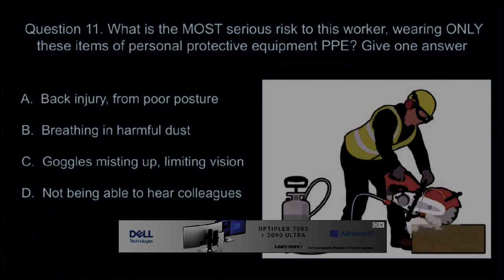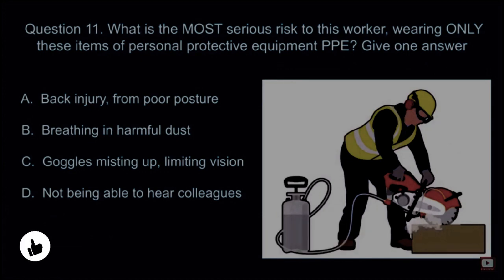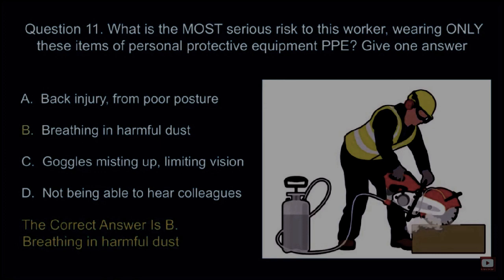Question 11: What is the most serious risk to this worker wearing only these items of personal protective equipment (PPE)? Give one answer. A: Back injury from poor posture. B: Breathing in harmful dust. C: Goggles misting up and limiting vision. D: Not being able to hear colleagues. The correct answer is B: Breathing in harmful dust.